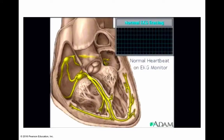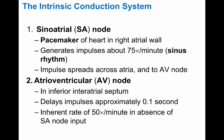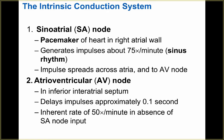The intrinsic conduction system starts with the sinoatrial node, or SA node. The pacemaker of the heart is in the actual right atrial wall and generates impulses at about 75 times per minute — this is what's known as sinus rhythm. The impulse spreads across the atria into the AV node at about 75 beats per minute.